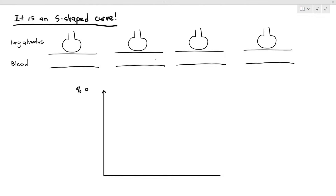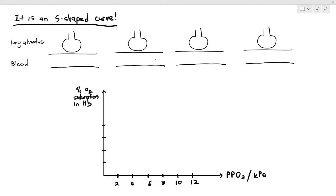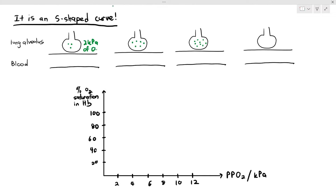With my oxygen dissociation graph, there are four situations where the lung alveolus has two kilopascals of oxygen, four kilopascals of oxygen, six, and also eight kilopascals of oxygen.